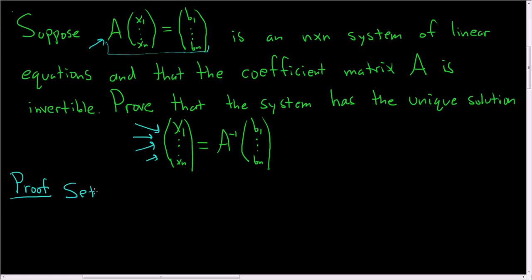So set x1 dot dot dot xn equal to A inverse times the following column matrix. Okay? And now we just have to show that this is a solution. So what we're going to do is just basically plug it in into this equation up here.